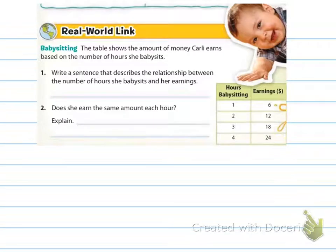Real world link. Babysitting. The table shows the amount of money Carly earns based on the number of hours she babysits. And look at this cute little baby. Let's give it a little mustache, yes. All right, so it says, write a sentence that describes the relationship between the number of hours she babysits and her earnings, and does she earn the same amount each hour? So I'd like for you to solve one and two. Go ahead and pause, please, and just stare at that adorable baby.